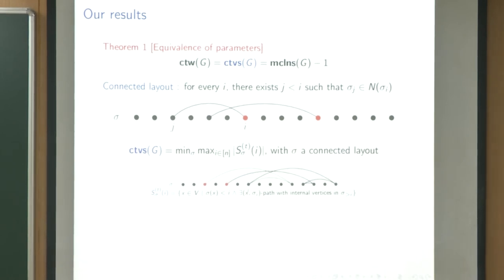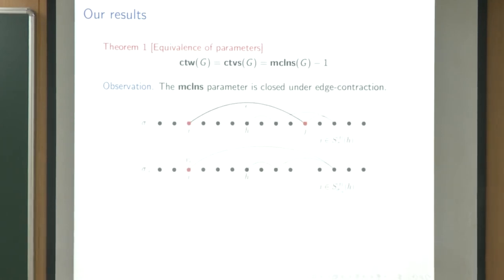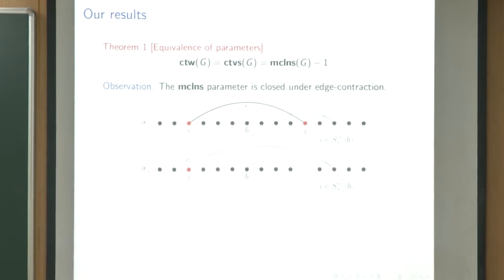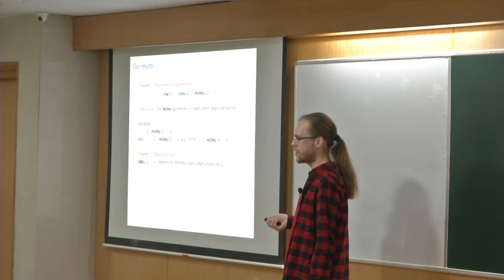All of these — connected treewidth, connected tree-vertex separation, and monotone connected lazy node search — turn out to be equal. Another key observation is that this parameter is closed under edge contraction: contracting an edge never increases the cost. Intuitively, contracting an edge doesn't change how paths behave — if there was a path through j to i before contraction, it still exists after.